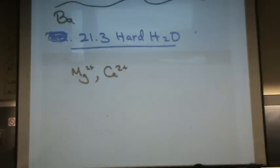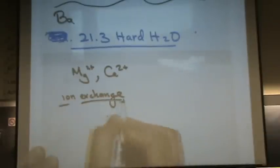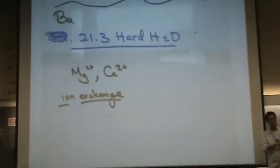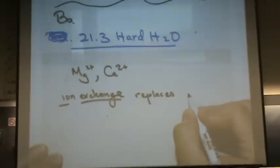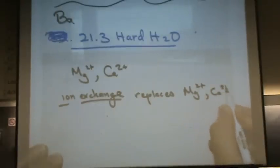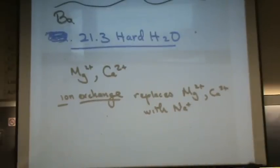It can be removed by something called ion exchange. If you have a soft water thing in your garage, that's an ion exchange unit. And basically what it does is it replaces Mg2+ or Ca2+ with Na+. Na+ is not hard water, doesn't precipitate out, and so it's not a component of hard water.